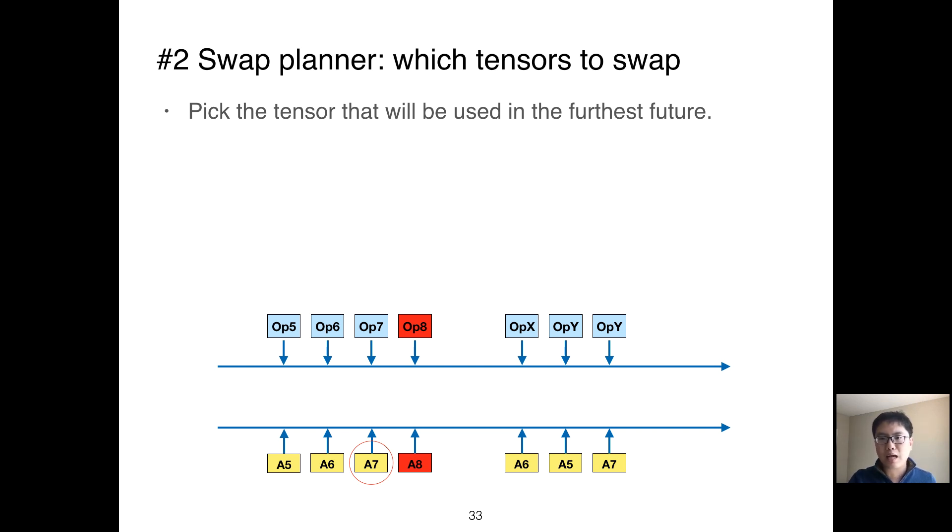As a result, we introduce a time window theta. The swap planner still uses the same strategy but chooses from those tensors whose most recent usage is outside the time window theta. In this case, both A6 and A5 meet the requirement, so we choose A5 to be swapped out as A5 is going to be used in the furthest future.